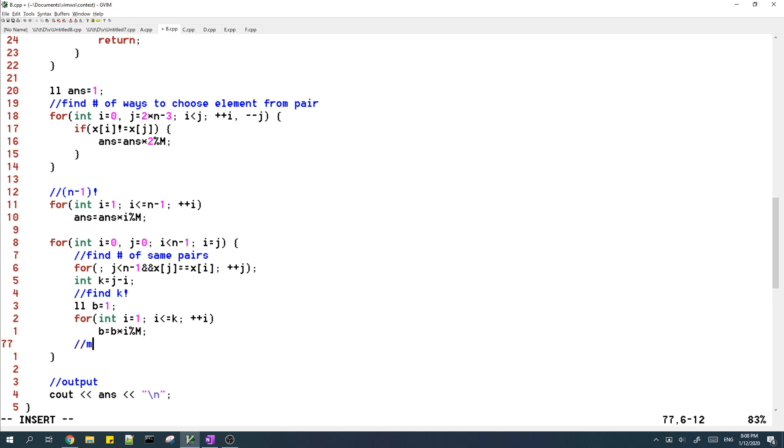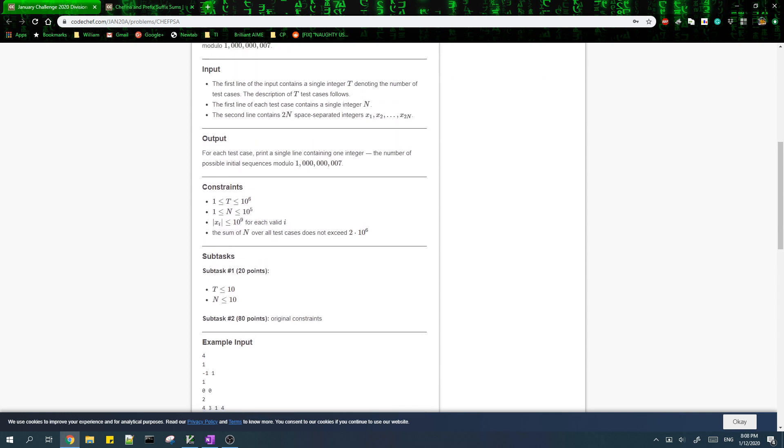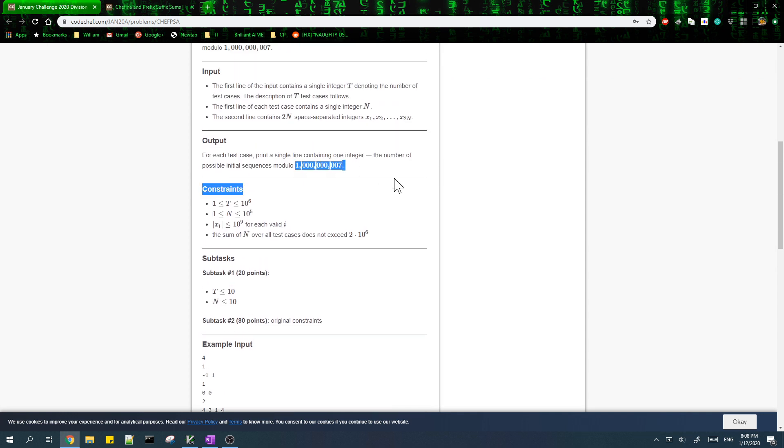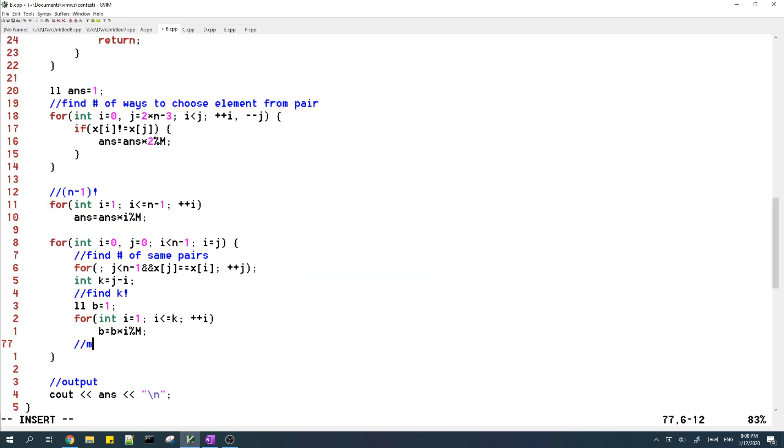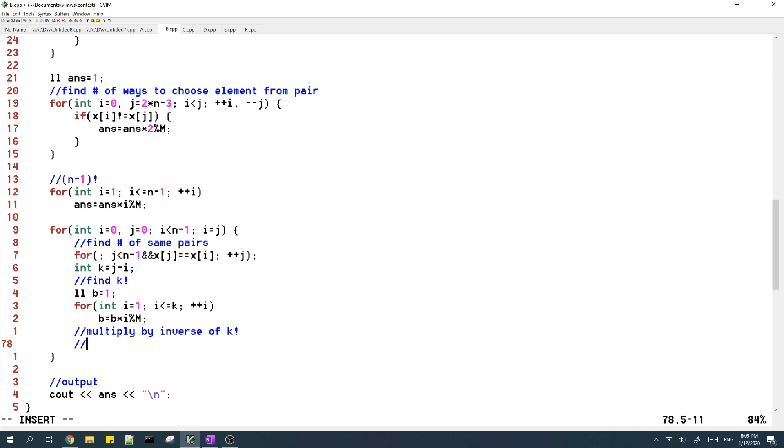So since we're working, the problem wants us to find the answer modulo this. So we need to multiply by the inverse of k factorial. And we know from using some math theorems that the inverse of k factorial is just k factorial to the power of mod minus 2.